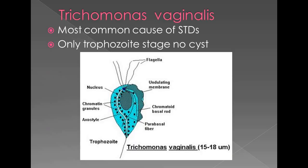The second parasite is Trichomonas vaginalis — the most common parasitic cause of STI. Only the trophozoite form is available; no cyst form occurs for this parasite. It is globular or pear-shaped with a specific twitching motility — when seen in saline mount, the parasite appears to twist — which is characteristic of Trichomonas vaginalis.